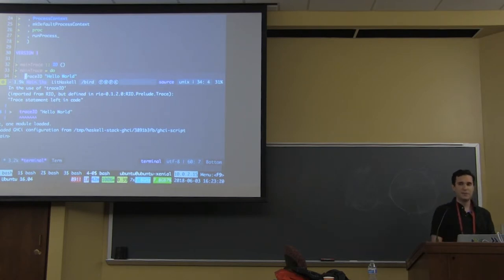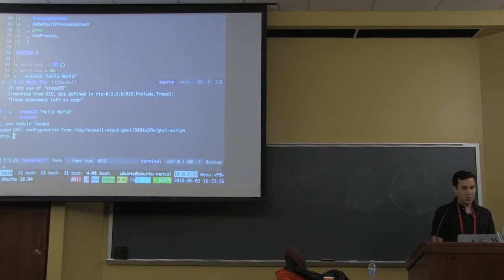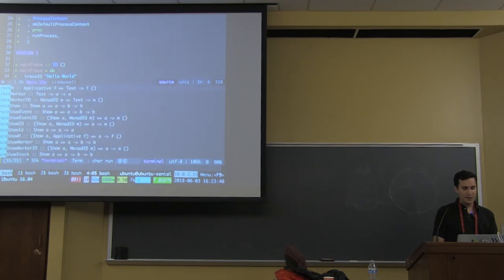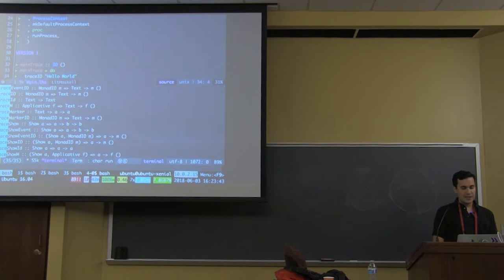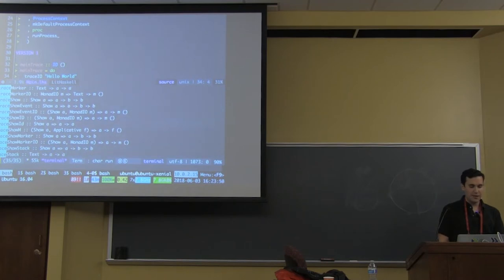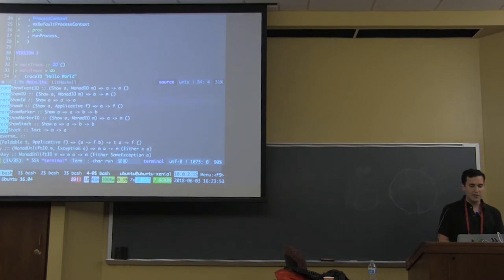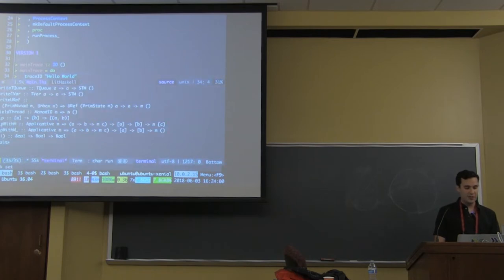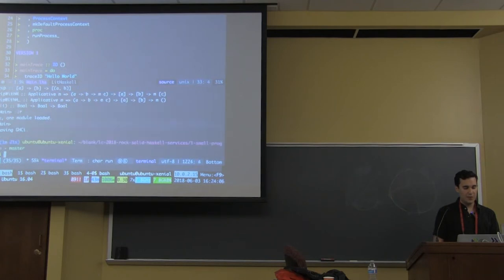What's the first thing you notice here that's different from vanilla Haskell? The fact that we're not using putStrLn. We only have these functions called trace. If I browse Rio and look up the trace functions, I have a bunch: trace ID, trace IO. This is the normal way you'd use putStrLn in Rio. You can use it inside a monad or outside of a monad without any problems.